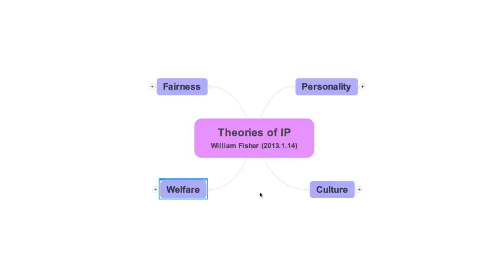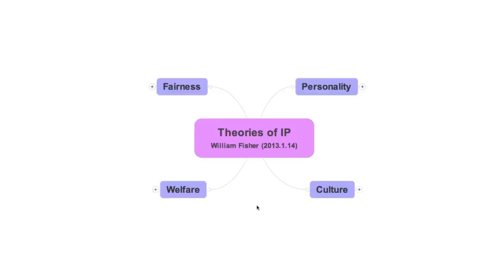Theories in the fourth cluster similarly look to the well-being of society at large, but define that well-being more capaciously. They contend that the law should be crafted so as to foster a just and attractive culture. In determining what a just and attractive culture would be, these theories do not limit themselves to aggregate consumer welfare measured by what consumers themselves currently want, but instead seek to identify and cultivate conditions that will support widespread human flourishing. So those are the four approaches. The labels we will use for the four clusters are fairness, personality, welfare, and culture.